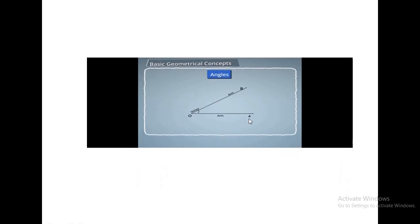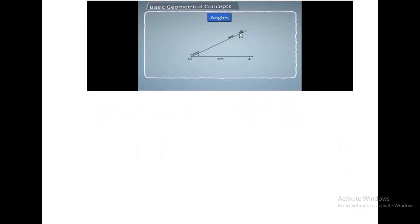Here, there is an angle AOB. O is your vertex, AO is your arm or you can say OA, and OB is another arm. So there are two arms given, two sides given: OA and OB.